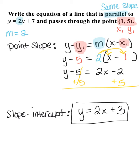If we were to graph this line, y equals 2x plus 3, and we graphed that other line in the original problem, y equals 2x plus 7, we would notice that they are parallel and running in the same direction.